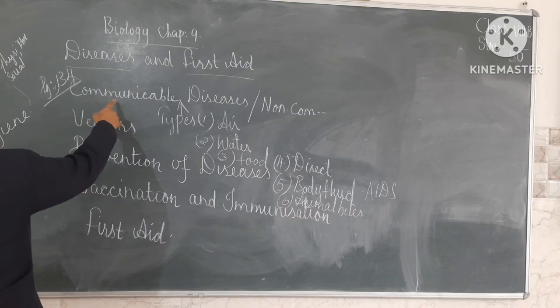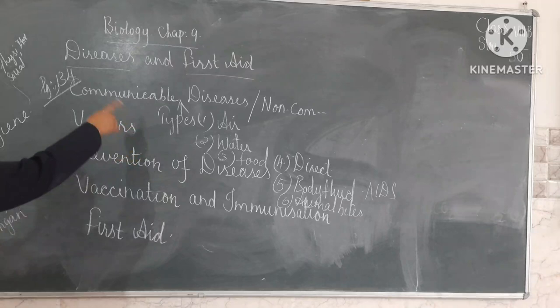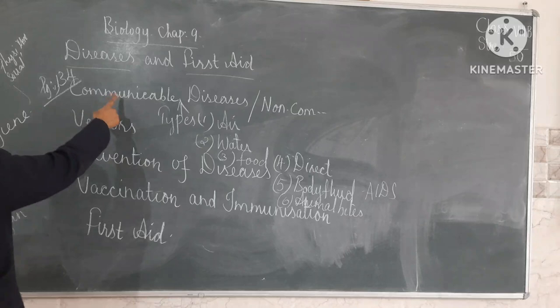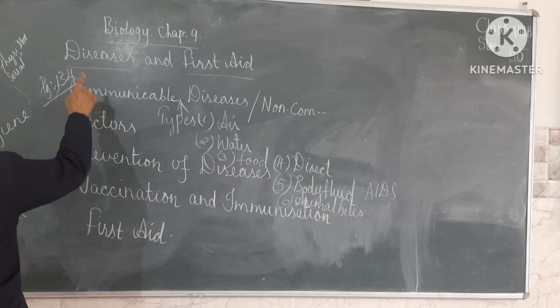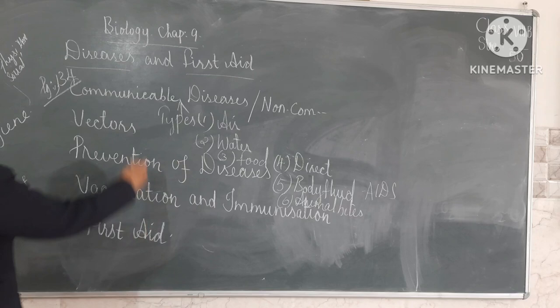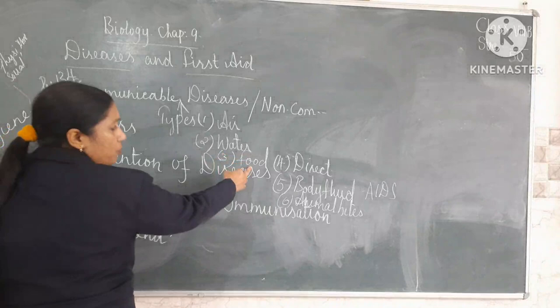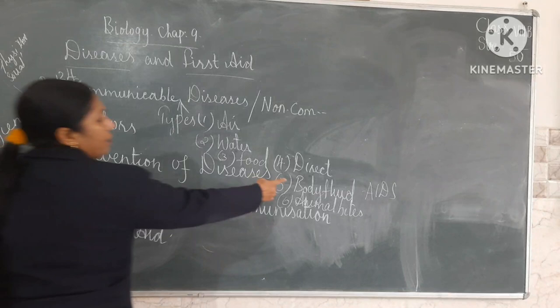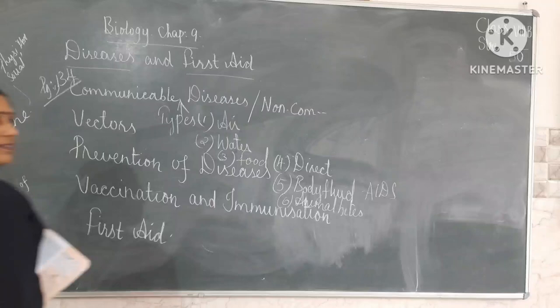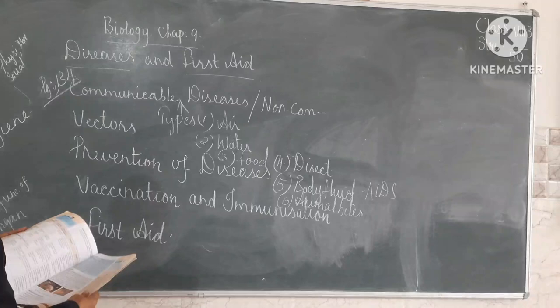To revise: we learned the meaning of communicable disease. Two types of diseases are there — communicable and non-communicable. Communicable disease spreads from an infected person to a healthy person. The types of communicable diseases, based on how they spread, are: airborne, waterborne, foodborne, through direct contact with an infected person, through body fluid, and through animal bites. The homework is page number 134, where one table is given that you should learn.